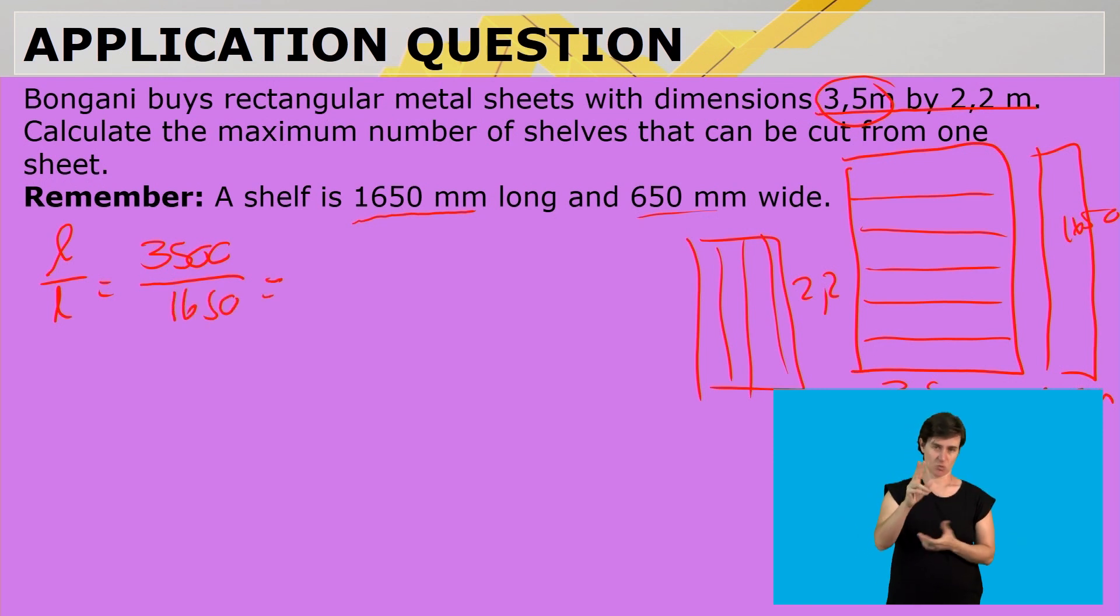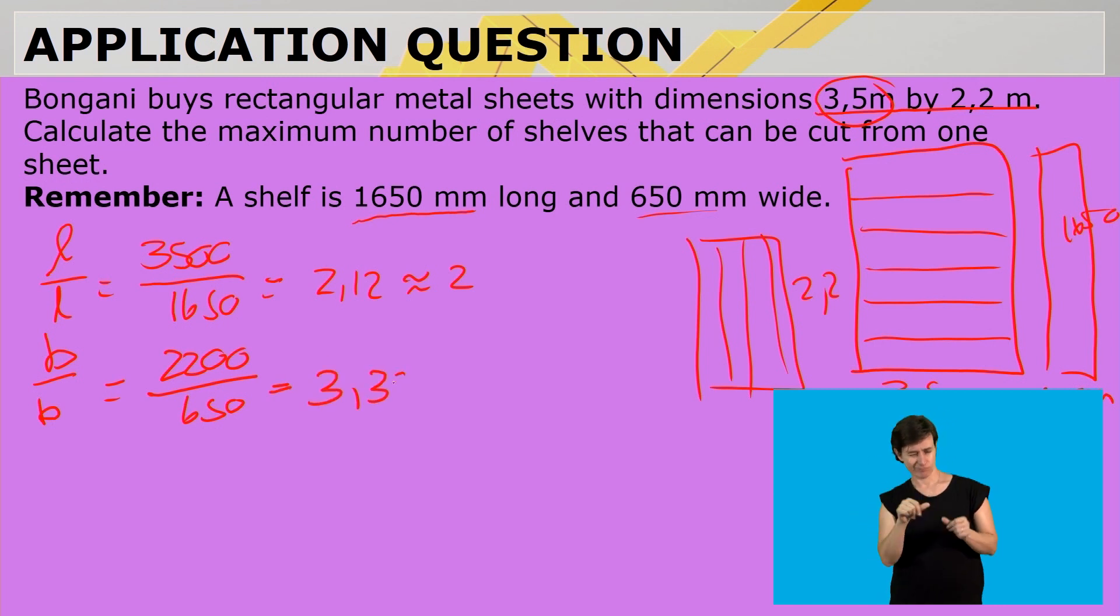And that is going to be 3,500 divided by the 1,650. So, in the length, we can fit 2.12, so that is then 2, and we take the width and divide it with one another, which is 2,200 divided by 650, and that is going to be 3.38, so that is 3.